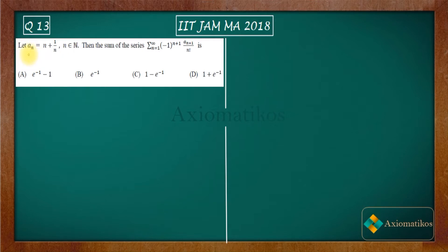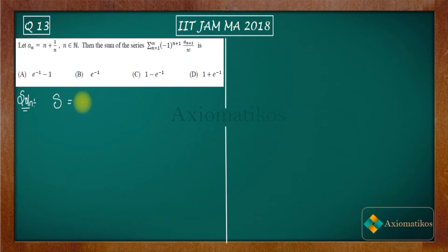Let A_N equal to (n+1)/n. Then we have to find the sum of the series. Let us begin by writing the sum in the form of S. So S is equal to the summation from 1 to infinity of (-1)^(n+1) times A_(n+1) divided by n factorial. This is your S.